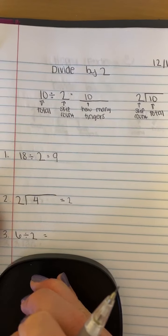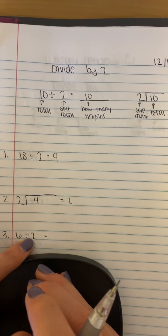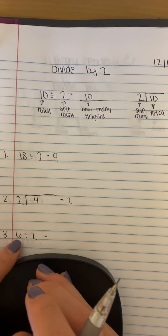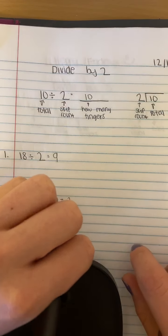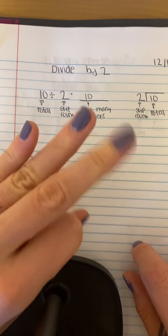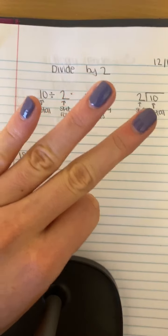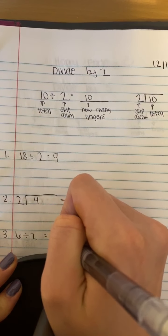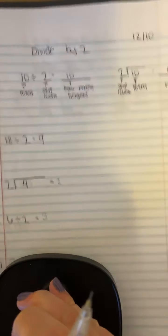And then we're moving down. Again, I have my total here divided by two, so I'm going to skip count by my twos and stop when I get to six. Six. Two, four, six. And I used one, two, three. Three fingers, so my answer is three. Six divided by two is three.